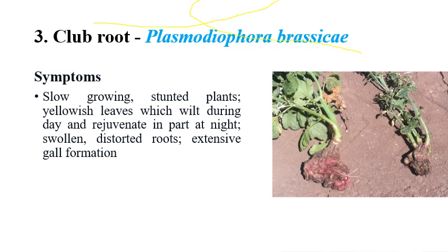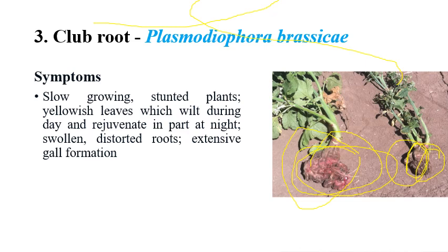Club root is caused by Plasmodiophora brassicae. The name itself indicates the symptom — roots are converted into club-like structures. We can see distortion of roots and extensive gall formation. Wilting of leaves can also be observed in the above-ground parts. If you examine below-ground parts, you can see swollen, distorted roots with extensive gall formation, due to the production of growth hormones by the pathogen.